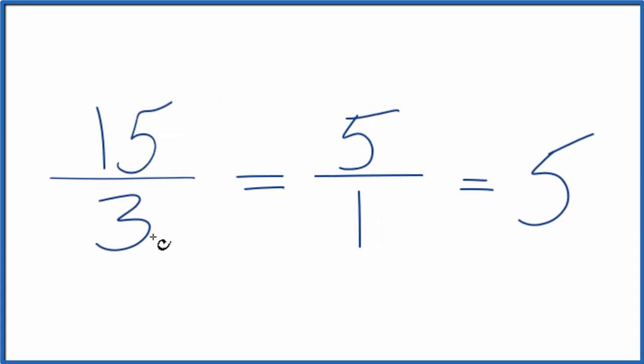Note that 15 thirds, that is an improper fraction. The numerator is greater than the denominator. So you could just divide 3 into 15, and that will give you the 5 as well.